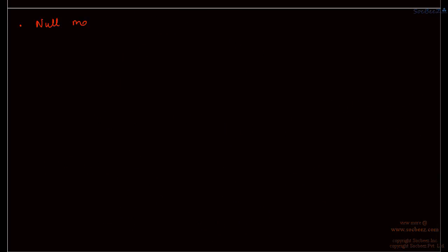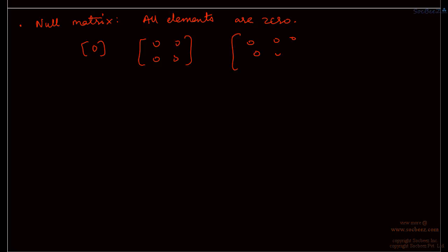What is a null matrix? A null matrix is one which has all its elements 0. However large a matrix you take, if you reduce all the elements to 0, it becomes a null matrix — null matrix of order 1, 2, 3, and so on. If all the elements are 0, it is just a null matrix.